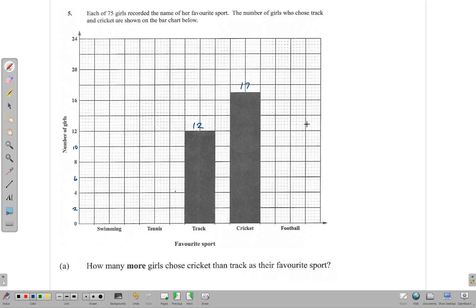So we have that 17 girls chose cricket and 12 chose track. We can answer the question easily: 17 minus 12 gives us 5. So 5 more girls chose cricket than track, and that's the answer. We move on.